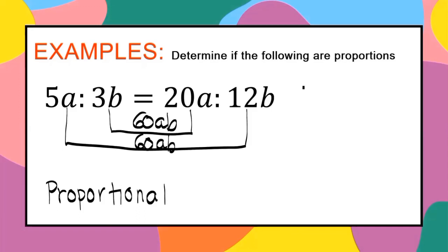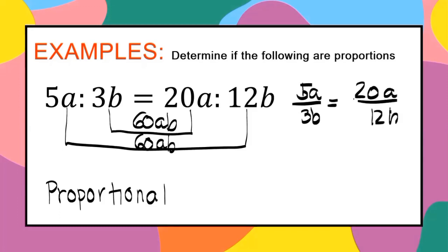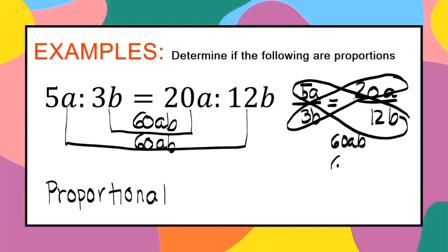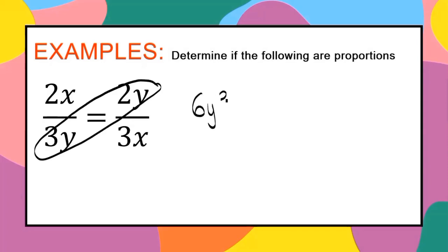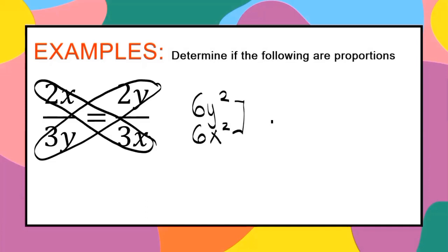If the ratios are written in fraction form, such as 5a over 3b equals 20a over 12b, all you have to do is cross multiply. If their products are equal, it is a proportion. For 2x over 3y equals 2y over 3x: cross multiplying gives 3y times 2y equals 6y squared, and 2x times 3x equals 6x squared. Their products are not equal, so this is not a proportion.